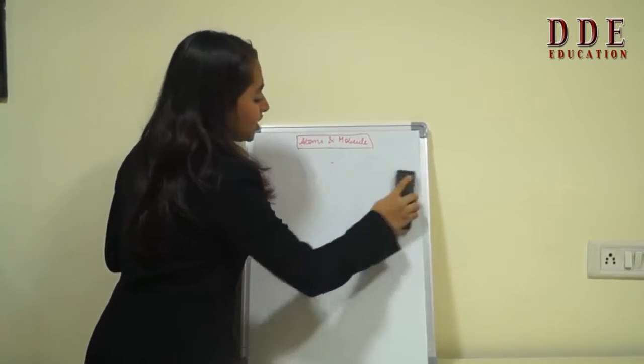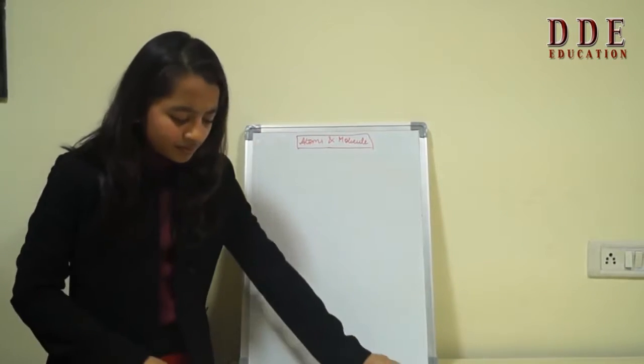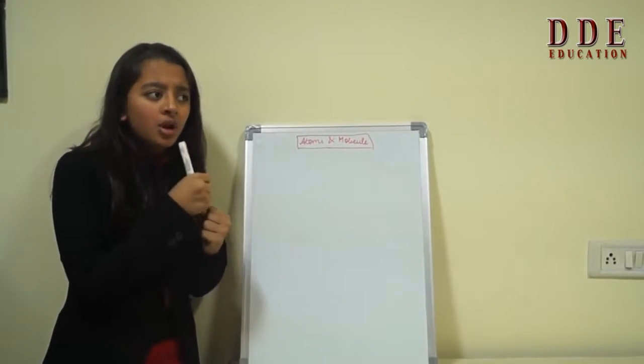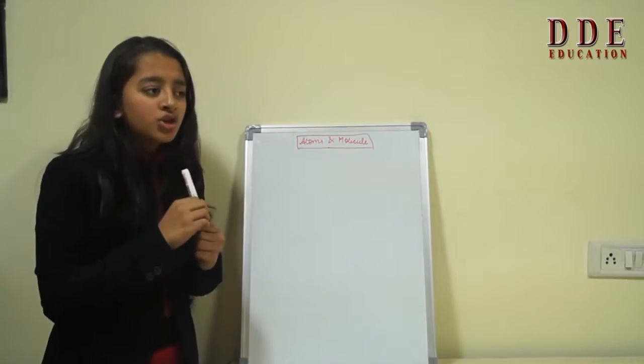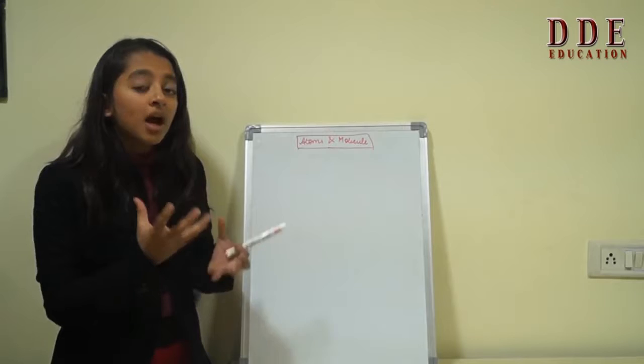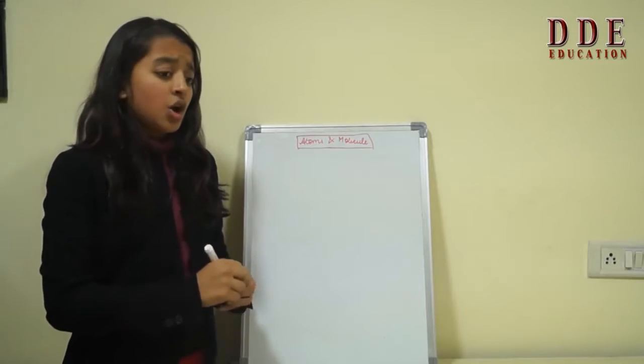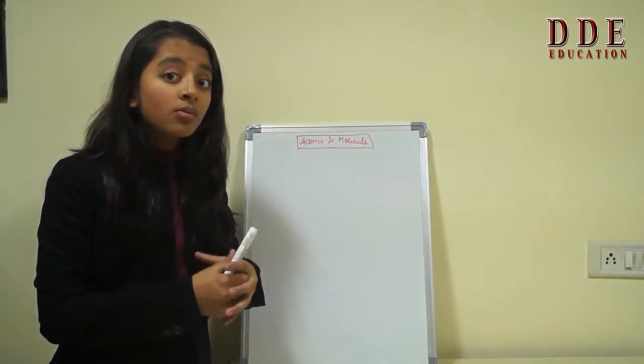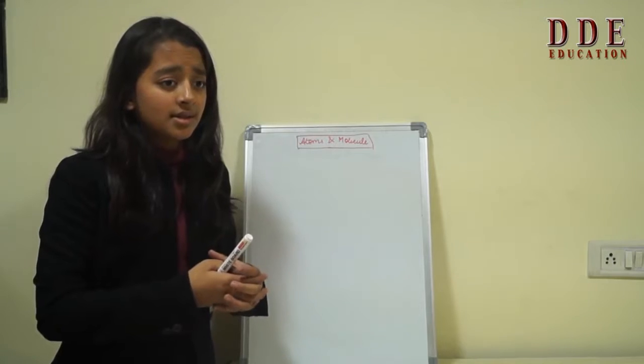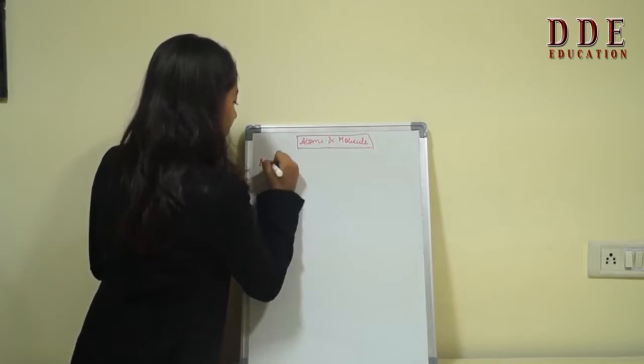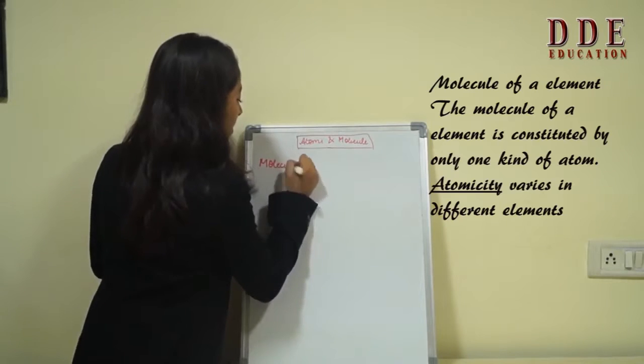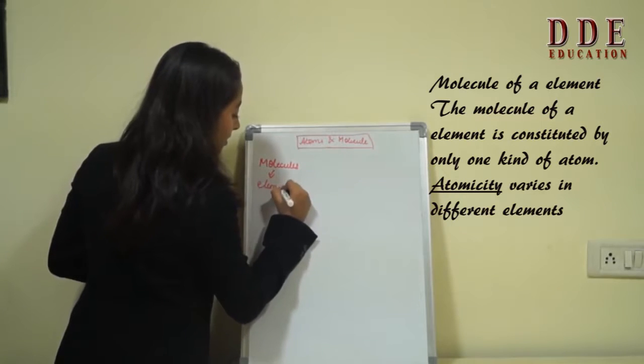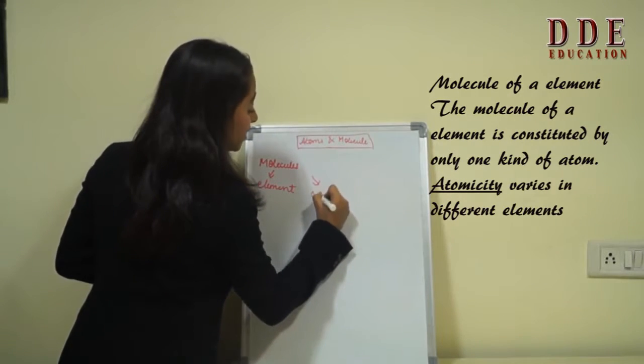Now my friends I have explained what is atomic mass. Now you might be wondering I mentioned what is a molecule. So now we are going to take up the topic how do atoms exist. You see atoms cannot exist independently. They need to form molecules to exist. There are two types of molecules. One is the molecule of an element and one is the molecule of a compound.